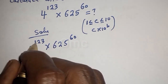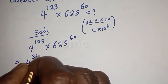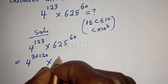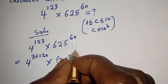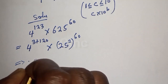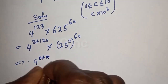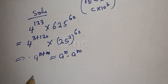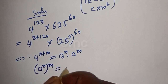4 raised to power 123 can be written as 4 raised to power 3 plus 120, and 625 can be written as 25 squared, to the power of 60. Note the exponent rules: a raised to power n plus m equals a raised to power n multiplied by a raised to power m, and a raised to power n to the power of m equals a raised to power n times m.